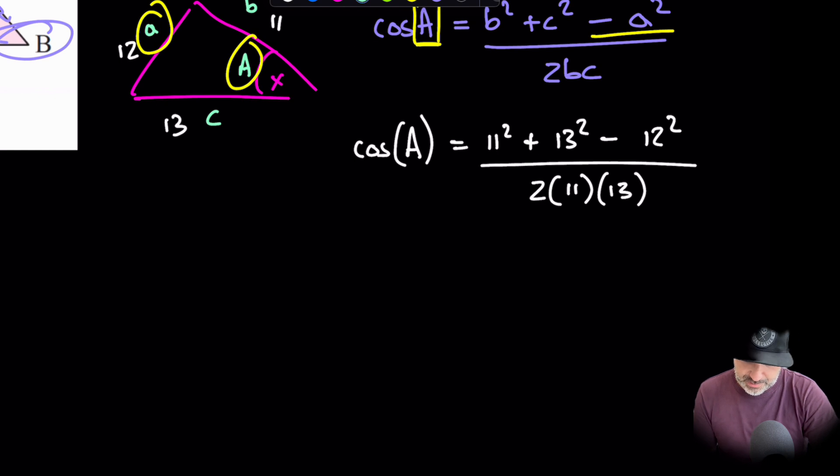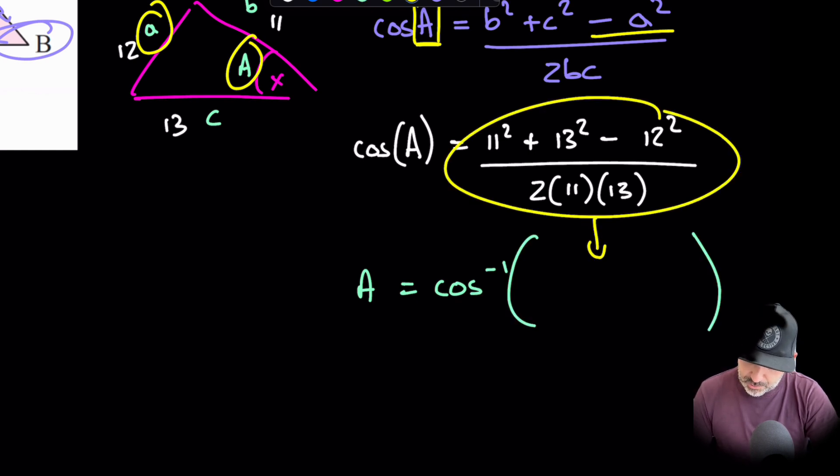Now, I need to do what I said previously, which is take the inverse of cosine of both sides. That'll just leave me with angle A. So on the right, it'll be inverse cosine, and I will just draw a bubble around that and substitute that in there. Again, I need to jump over to the calculator and punch that in.